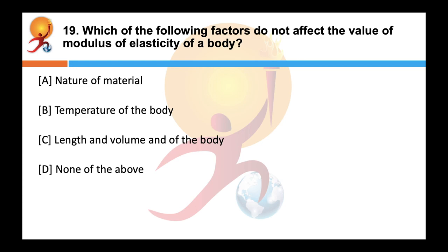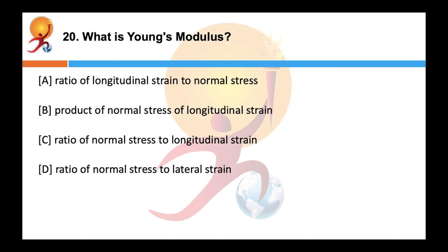Which of the following factors do not affect the value of the modulus of elasticity? Correct answer is length and volume of the body. Modulus of elasticity depends on the nature of the material and the manner in which the body is deformed. It also depends on temperature but is independent of dimensions like length and volume. Young's modulus is defined as the ratio of normal stress to longitudinal strain within the limit of proportionality, i.e., Y = normal stress / longitudinal strain.